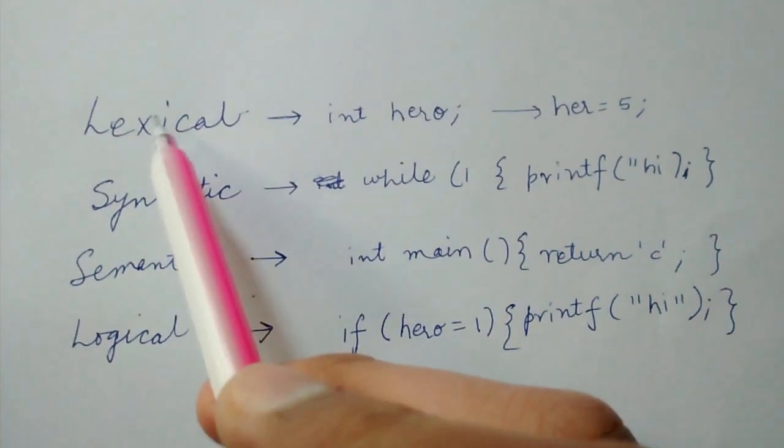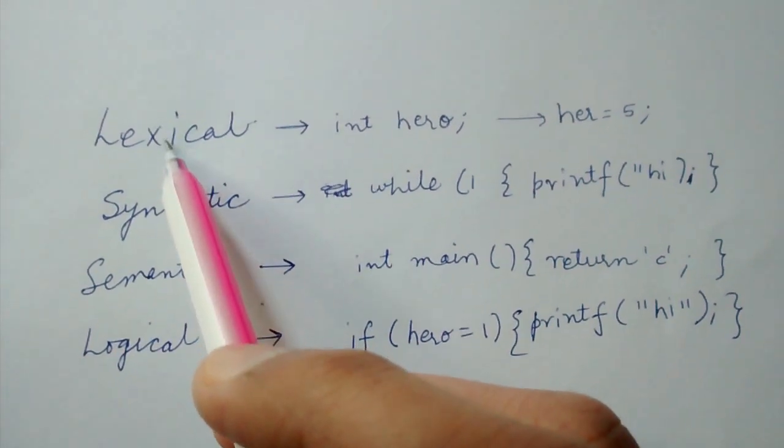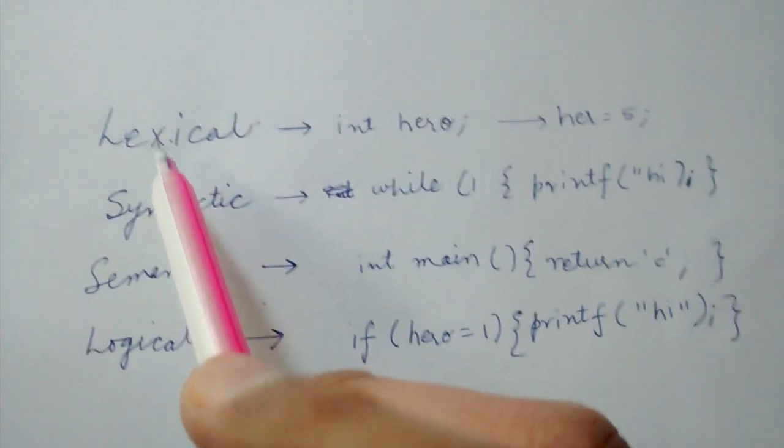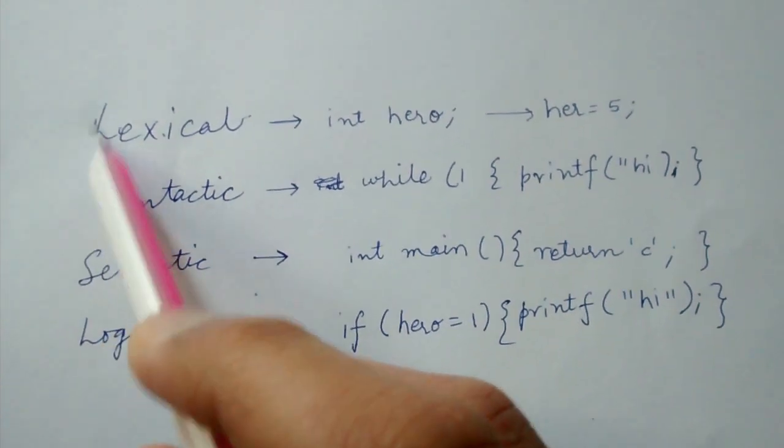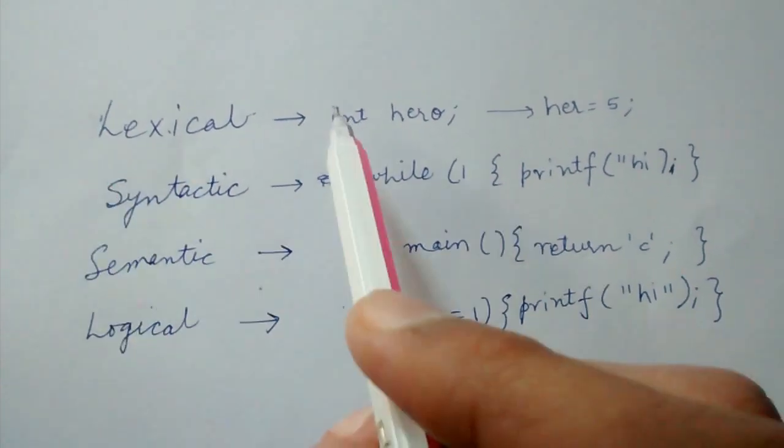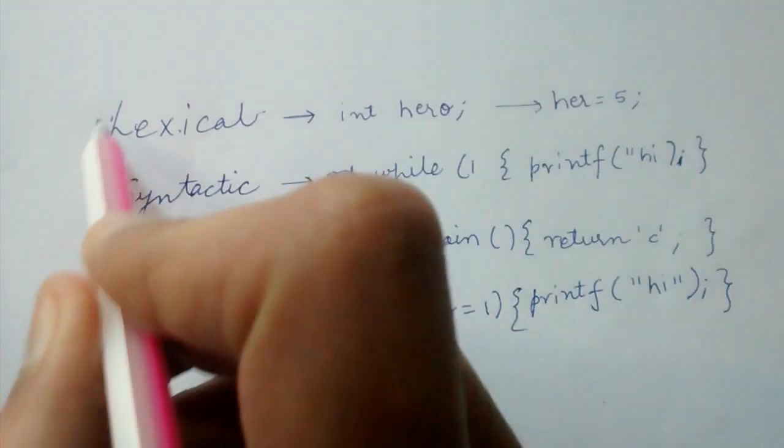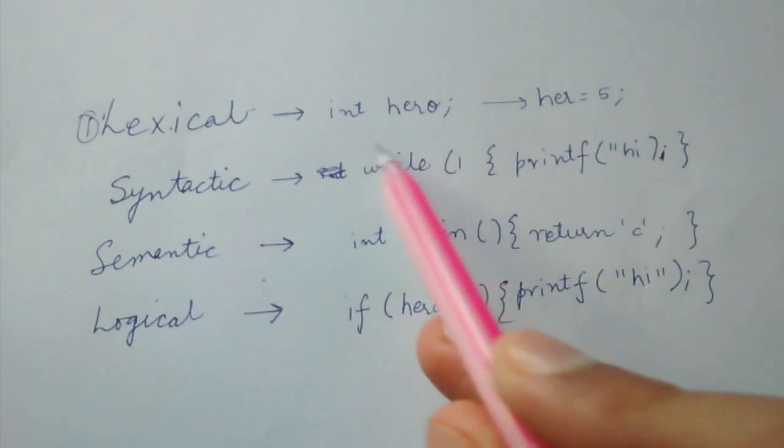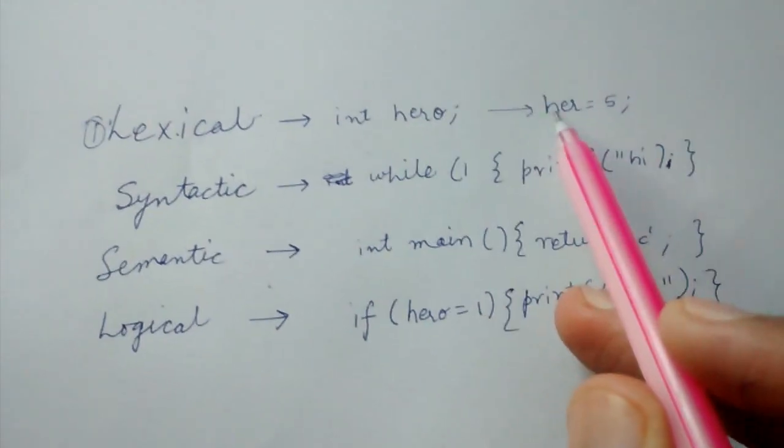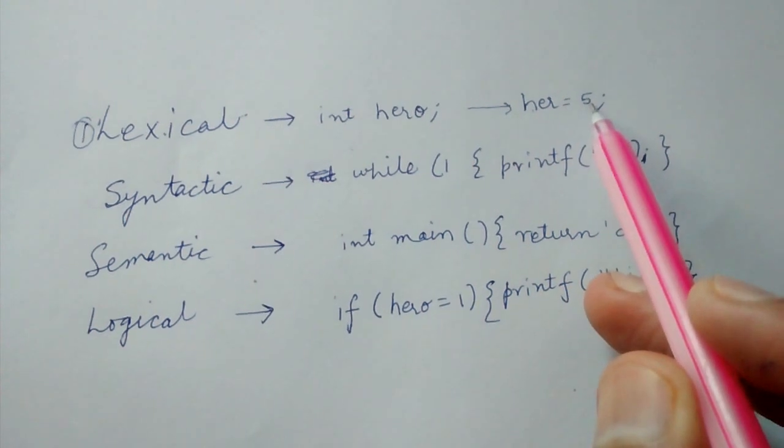Today we will quickly see the 4 types of errors in writing programs. First are lexical errors, which basically means errors due to some spelling mistake. Like we write int hero and then in the next line we write her is equal to 5.